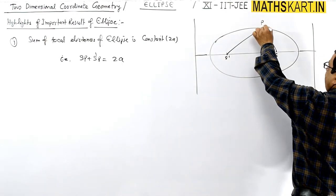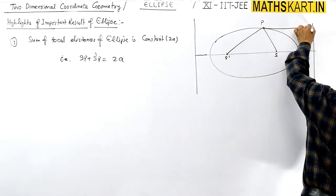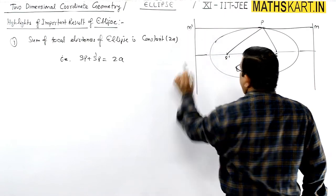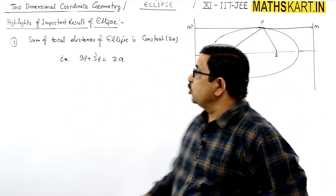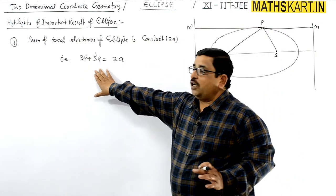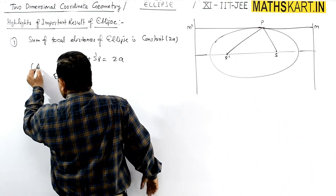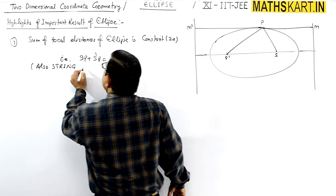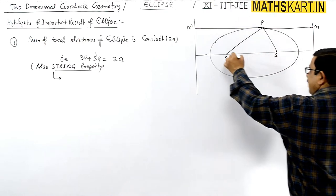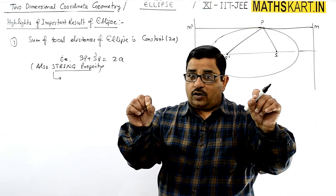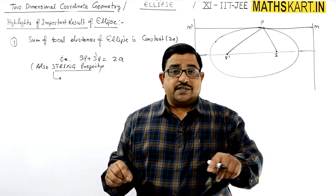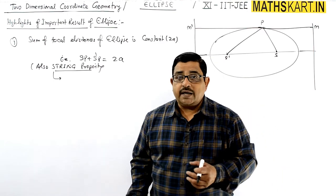To prove this result, take a point P on the ellipse and drop two perpendiculars PM and PM' to the two directrices. We have to prove that the sum of the focal distances equals 2a. This is also known as the string property, because if you place nails at the two foci and use a non-elastic string of length 2a, you can trace the ellipse.